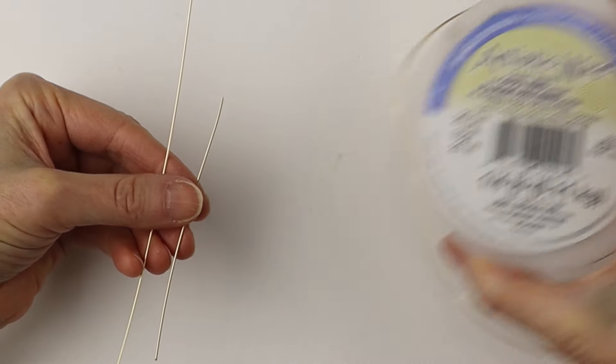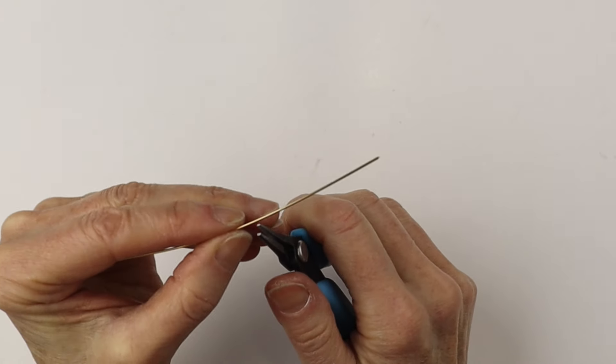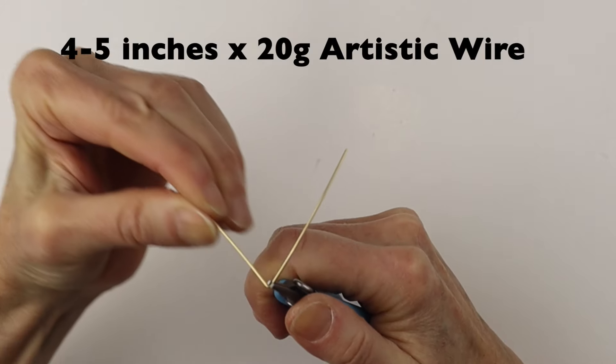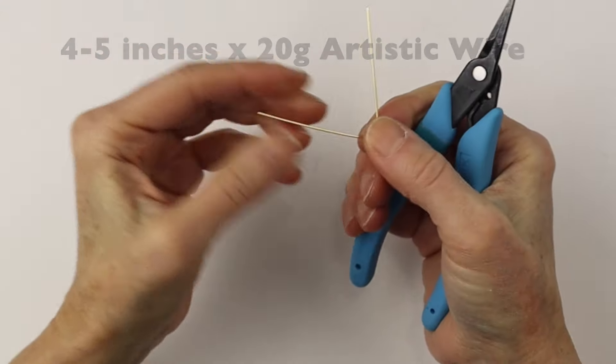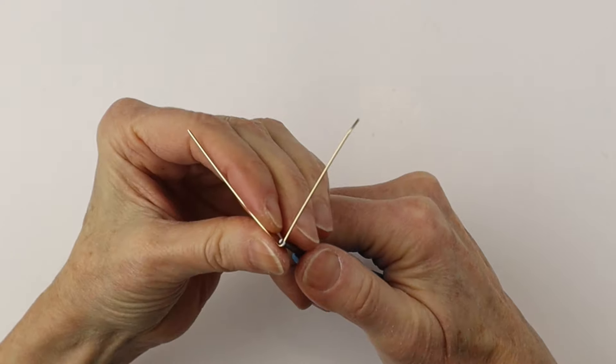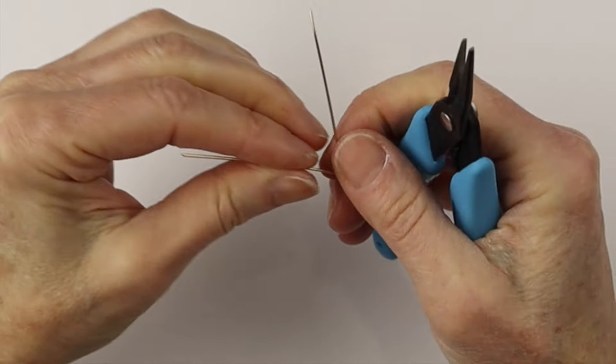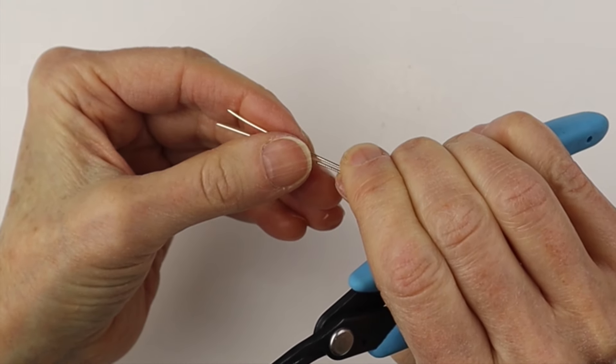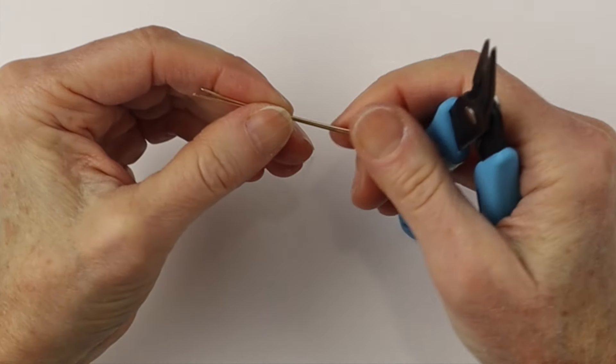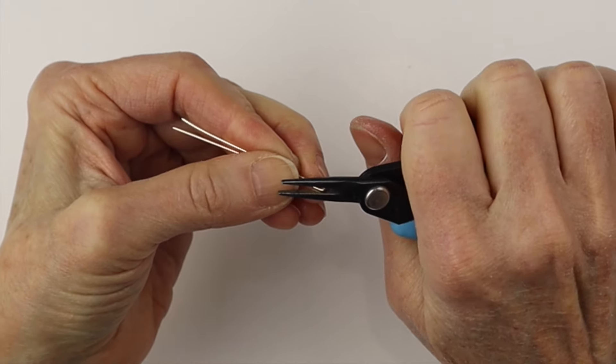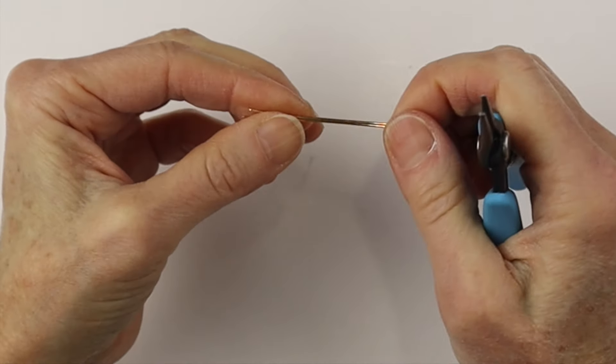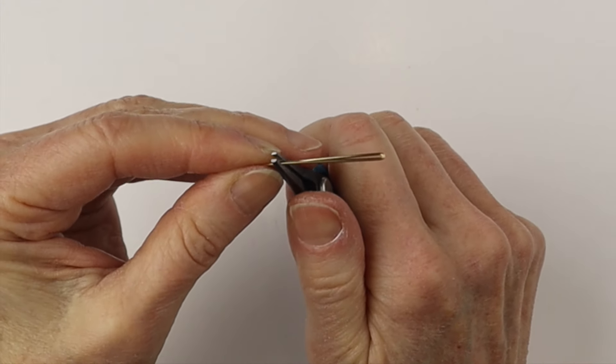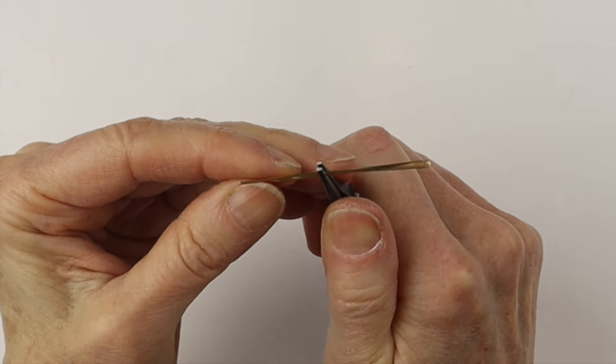So now we're using 20 gauge artistic wire in the gold color. Take about four to five inches and bend it at the halfway point with the flat pliers. Pinch it right in on a nice sharp bend and bring the wire straight up. Adjust it, pinch it a little bit, and you can make it as long as you like.